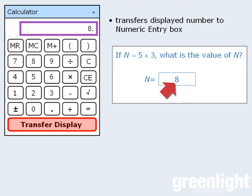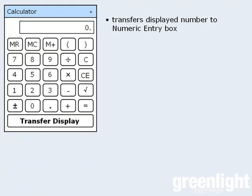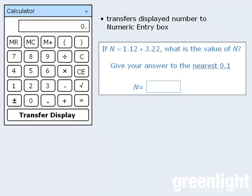Now as you can see, this is a convenient feature, but you should be careful when using this button. If the question asks you to round your answer, say to the nearest tenth, and this is the number in the display window, then pressing the transfer display button will transfer the entire number to the entry box. And if you fail to round the number to the nearest tenth, it will be scored as incorrect. So just be careful when using the transfer display button.